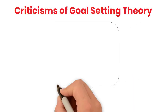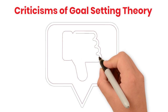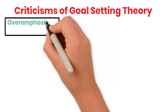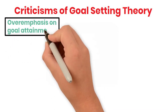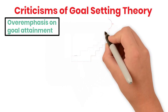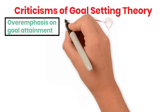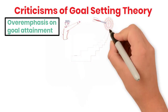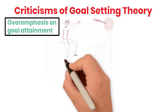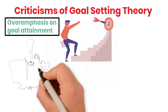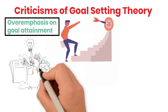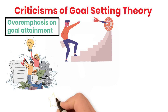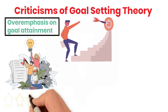Despite its strengths, goal-setting theory faces criticism. One major criticism is the potential for overemphasis on goal attainment. Focusing too much on achieving specific goals can lead to unethical behavior or burnout, as individuals might resort to extreme measures to meet their targets. For example, employees might cut corners or engage in unethical practices to achieve sales targets, compromising their integrity and the organization's reputation.